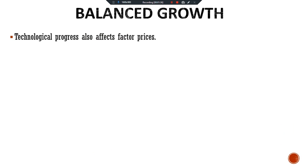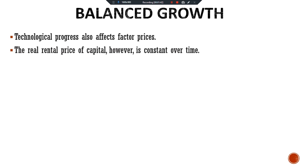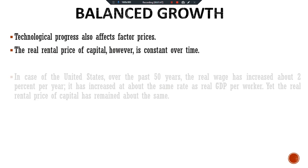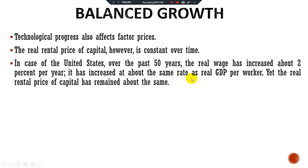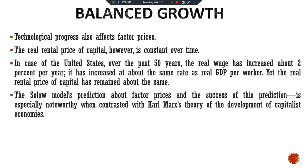Technological progress also affects factor prices. The real rental price of capital, however, is constant over time. In the case of the United States, over the past 50 years, the real wage has increased about 2% per year — at about the same rate as real GDP per worker — yet the real rental price of capital has remained about the same.